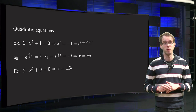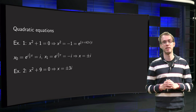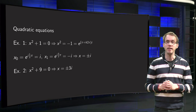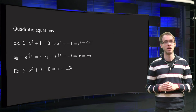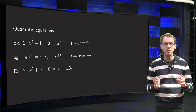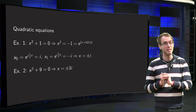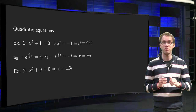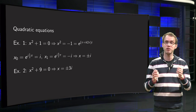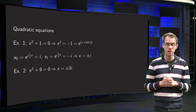Now we know complex numbers, we can solve every quadratic equation, even if the discriminant is negative. That is what you will learn in this video. We will start out with the easiest one: x squared plus 1 equals 0.